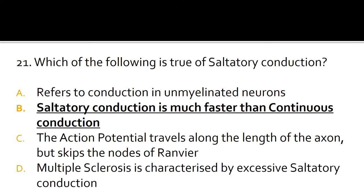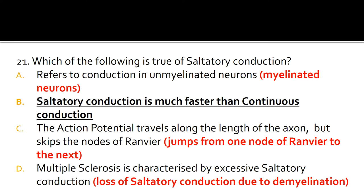The correct answer is B: saltatory conduction is much faster than continuous conduction. A is false because saltatory conduction refers to conduction in myelinated neurons. C is false because it is the other way around — the action potential skips the main length of the axon and jumps from one node of Ranvier to the next. D is false because multiple sclerosis is characterized by loss of saltatory conduction due to demyelination.